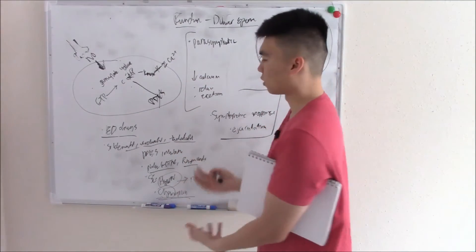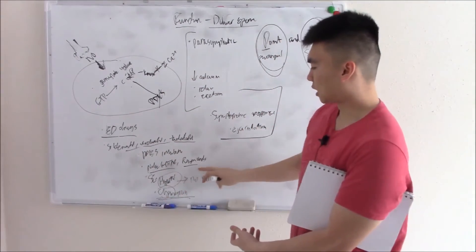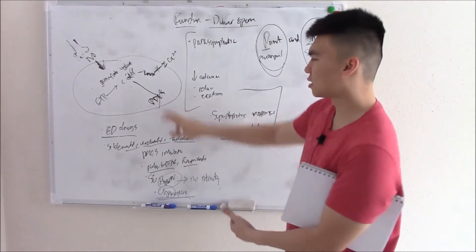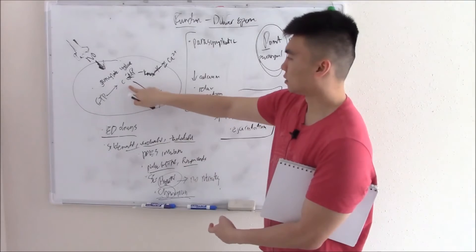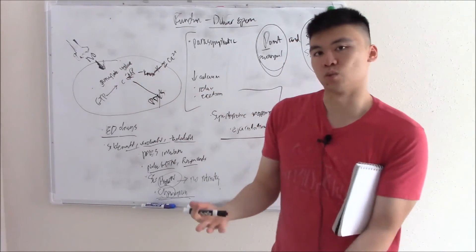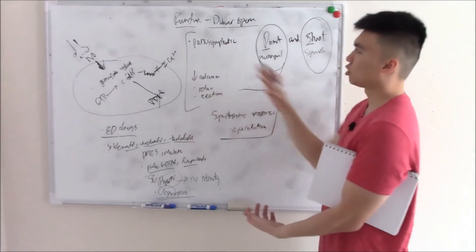So know the drugs, know the side effects, and then know how it works. Don't just know it works on PDE5. That's too basic. Know that it raises cyclic GMP, which decreases calcium and causes relaxation. That is your drugs.